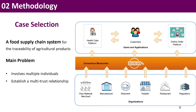The case we selected is the food supply chain system for the traceability of agricultural products based on the consulting blockchain technology, which is quite a typical and successful project. Here is the overview of the blockchain system, which can be basically divided into three layers: the users' and applications' layer, the consulting blockchain layer, and the organizations' layer. The main problem the tracking system faces is that the process involves multiple individuals, and it is difficult to establish a multi-trust relationship among these relevant parties. They fully apply the blockchain to address the problem of agricultural product quality tracking, creating an immutable tracking channel by recording data from those relevant organizations, which simultaneously maintain a single data source and consistency of data records.